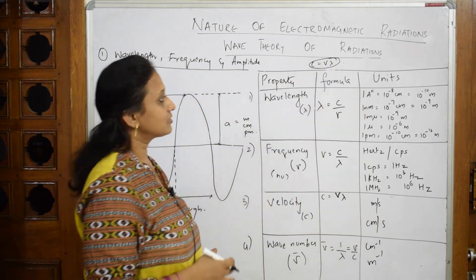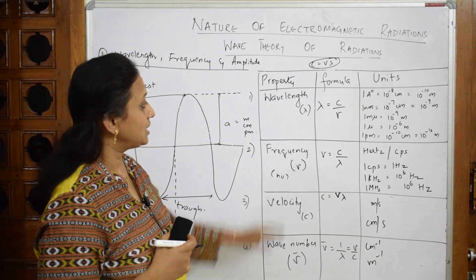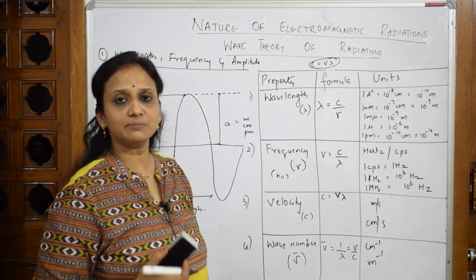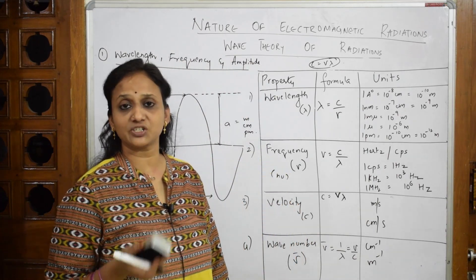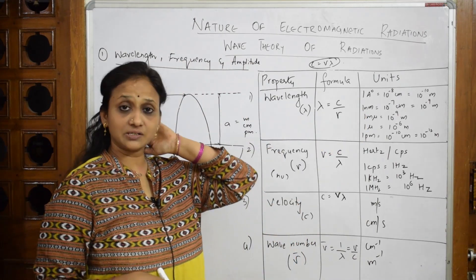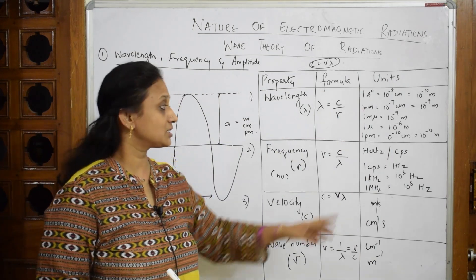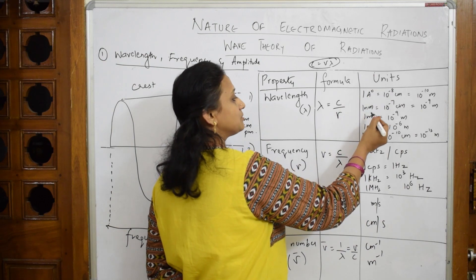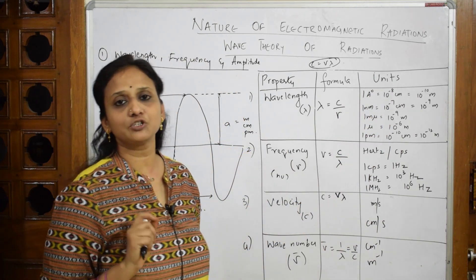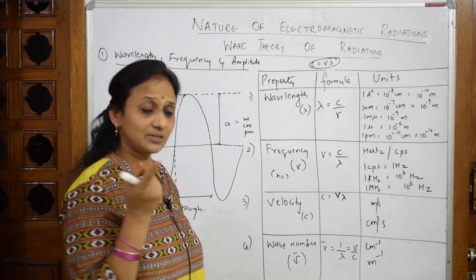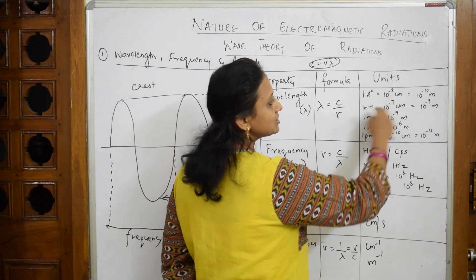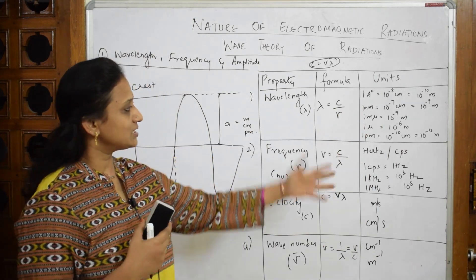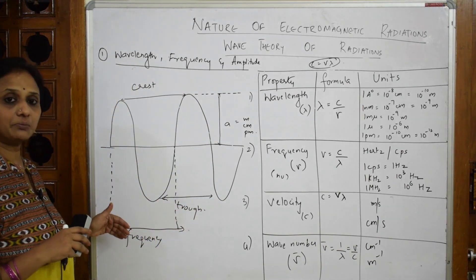You've already studied the formula c = νλ. From this you can derive the unknown quantity. For wavelength: λ = c/ν. The units for wavelength are angstrom, nanometer, micron, and picometer. All the conversions you should know — one angstrom is 10 to the power of minus 8 centimeters, and 10 to the power of minus 10 meters.